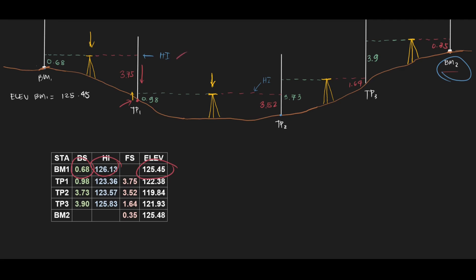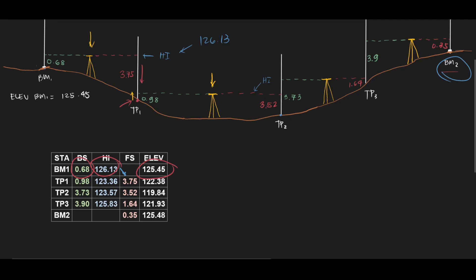So this 126.13 is the first HI. At TP1 you have a foresight from the first setup. This is a foresight on TP1. Then you subtract 3.75 from the HI, and you will get 122.38. So this TP1 elevation is 122.38.